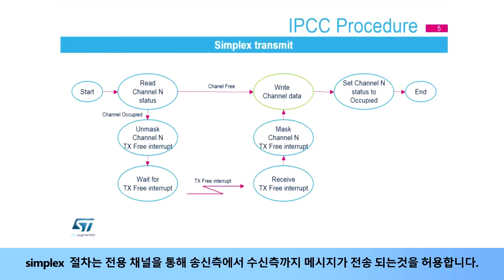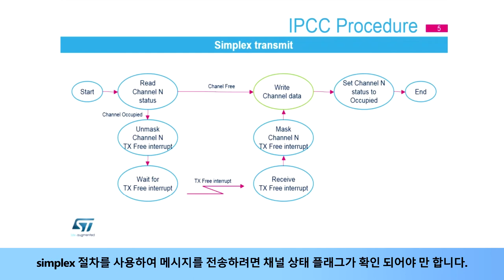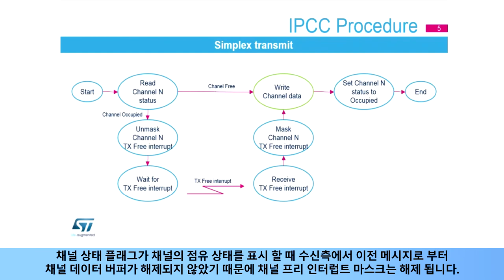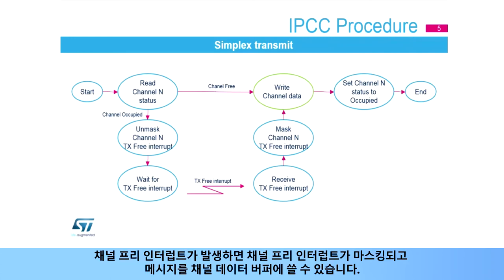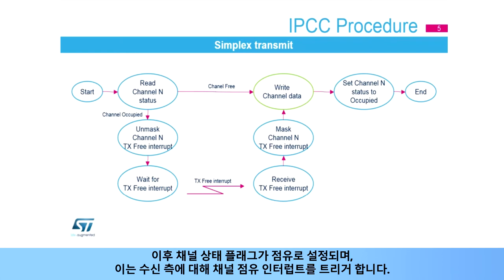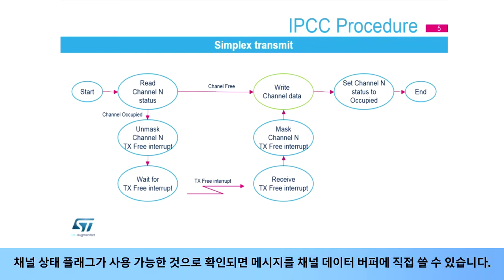The simplex procedure allows the transfer of a message from a sending side to a receiving side via a dedicated channel. To transmit a message using the simplex procedure, the channel status flag is checked. When the channel status flag indicates channel occupied or flow off — due to the receiving side not having freed the channel data buffer from a previous message — the channel-free interrupt is unmasked. Once the channel is freed by the receiving side, a channel-free interrupt, or flow-on, is generated. When the channel-free interrupt is generated, it is masked, and the message can be written in the channel data buffer. Subsequently, the channel status flag is set to Occupied, which triggers a channel-occupied interrupt for the receiving side.